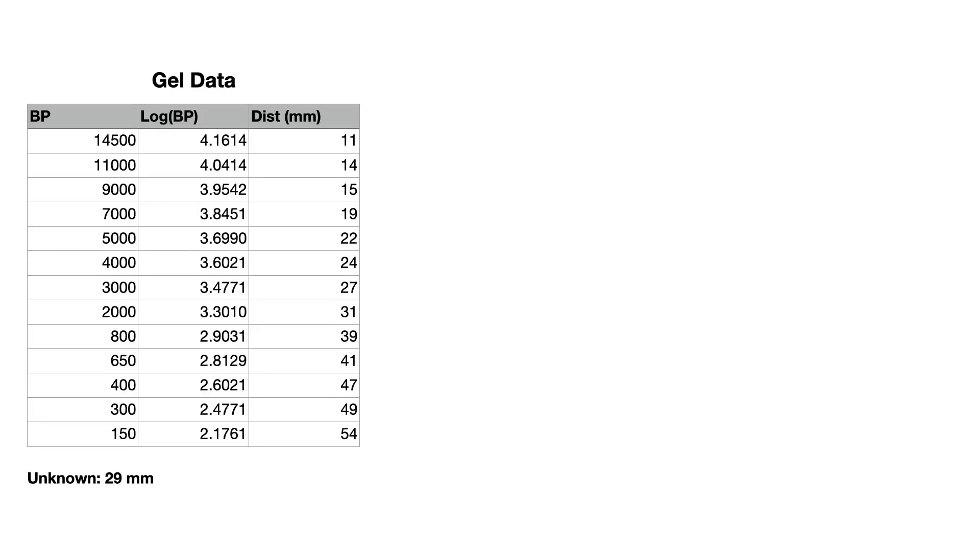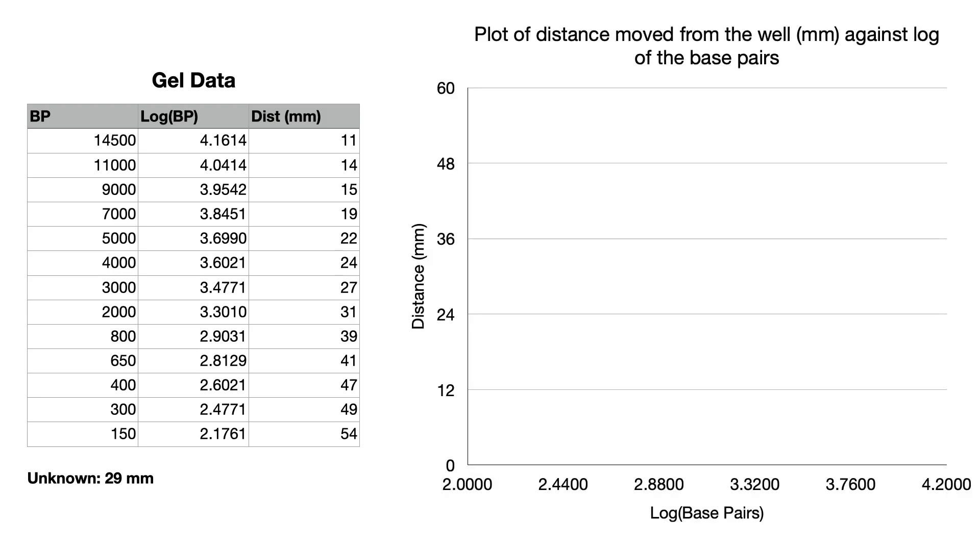So what about when we have that smaller gel where the distance wasn't 22 millimeters but was 11? Again we can plot the data. Here's our graph - note that the top now is 60 and not 105 or 110 that we saw on the earlier graph because the values are now smaller.